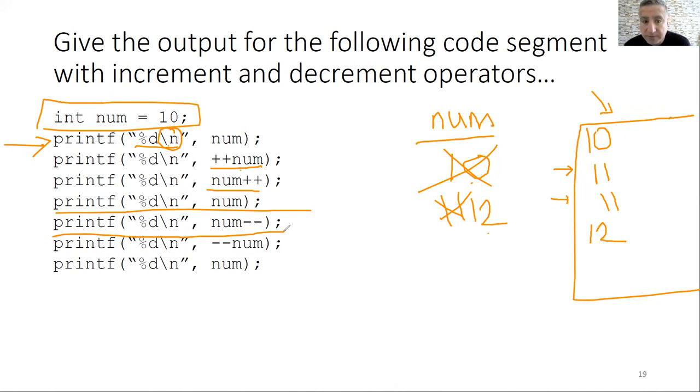Now we have num minus minus. How should I read it? Use the num value, then decrement it. Let's use the num value. What is the num value? 12. Use in the printf statement. And then, after the printf statement, then decrement it. Now it's 11. In that statement, however, decrement the num value, then use it in the printf. Decrement first. And then using the printf, here printf the current value. Umur, is it okay for you? Any questions?